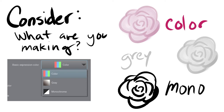Another thing to look at is color. In Clip Studio they call this basic expression color — other programs might call it something different — but essentially it's how many colors you're going to be using in your image. This will depend on what you're making. If you're doing a full image, you'll want to do color for sure. If you're doing a sketch or some concept art, you might want to start in grayscale mode. Grayscale gives you just the values, which can be really helpful if you're starting a drawing, doing a sketch, or printing something cheaply like a zine.